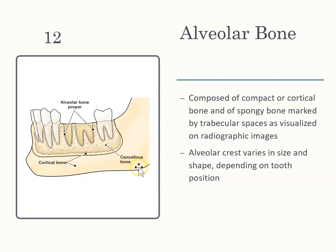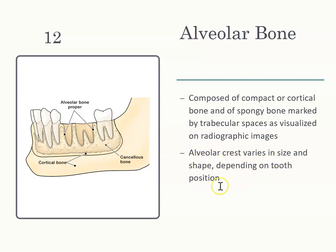Alveolar bone — we have different types. On the inside is cancellous bone, also known as spongy bone because it looks spongy. The outside is hard cortical bone. The bone surrounding the tooth socket is your alveolar bone proper — the bone very close to the tooth. The alveolar crest varies in size and shape depending on tooth position, so if a tooth is extruded or misaligned, the bone might look different.